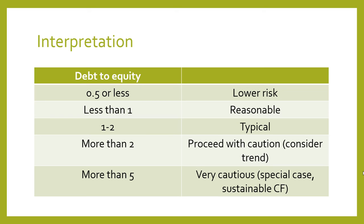One to two is typical for a lot of businesses. Once it starts to go more than two, you want to proceed with a little bit of caution and consider the trend — is it getting worse, are they leveraging up? If a company is loss-making with a debt to equity of over two, you're going to start to get really worried. If it's more than five, you ought to proceed with great caution.